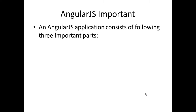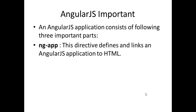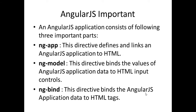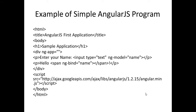AngularJS applications consist of three important parts. The first is ng-app — when you write ng-app, our browser can see that the AngularJS application starts from here. The second is ng-model — this directive binds the value of AngularJS application data to an HTML input control. The third is ng-bind — this directive binds the AngularJS application data to HTML, which I will show you in the next slide.